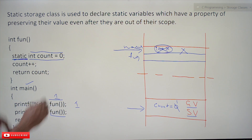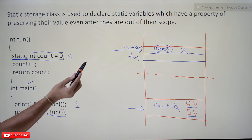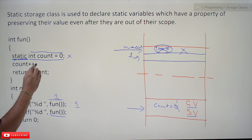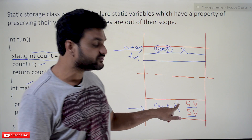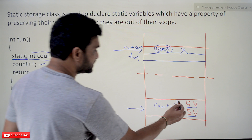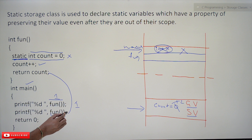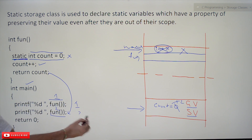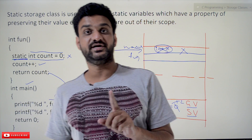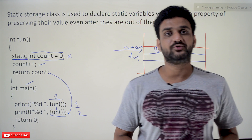Once the static variable is defined in memory, this initialization line will never be executed again. So on the second call, the current value of count is 1, which gets incremented to 2, and 2 gets printed. That is the key use of static — the value is preserved across function calls. Make a note of that point. So this is all about auto and static; hope you got the clarity on this concept.